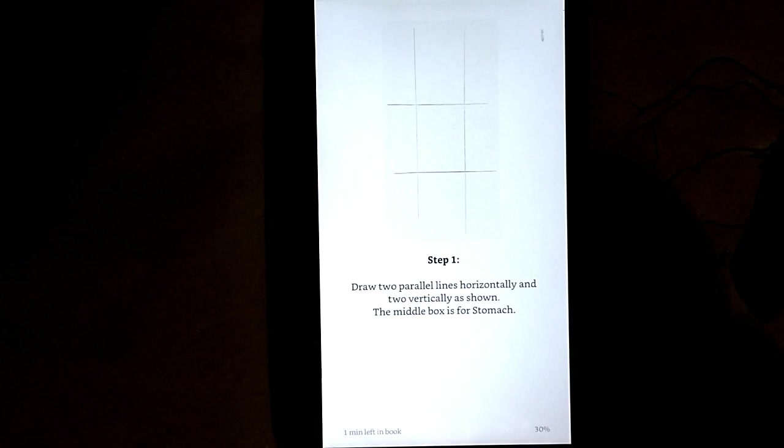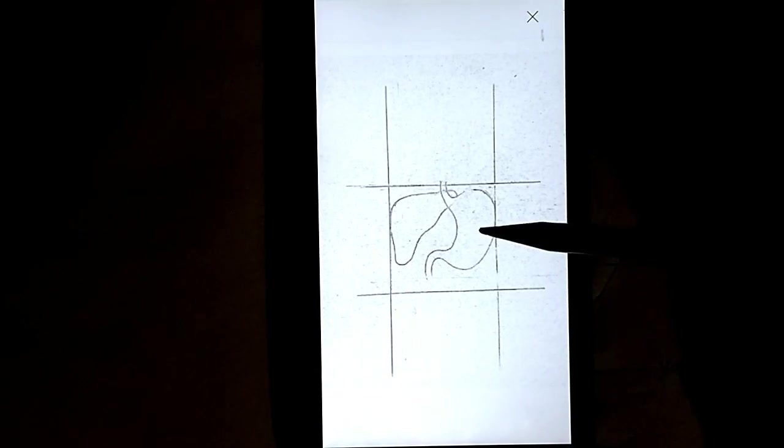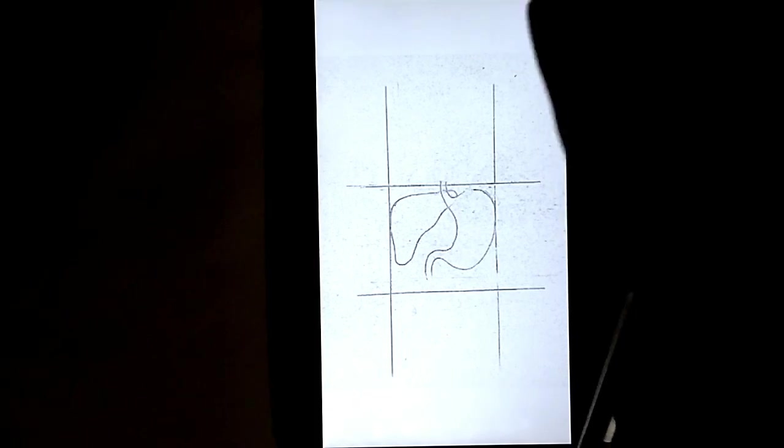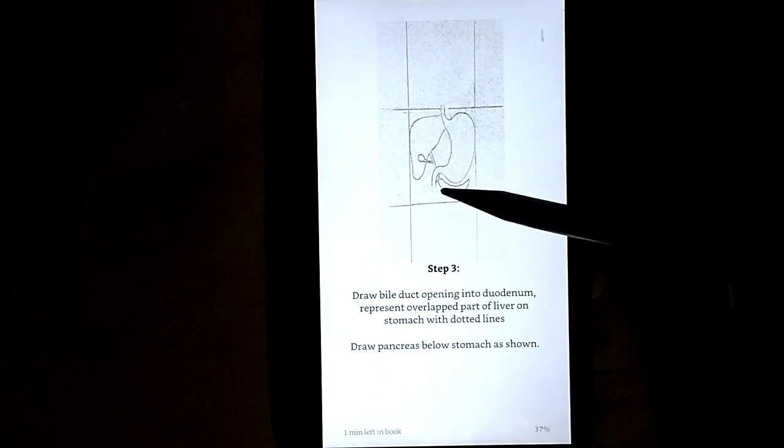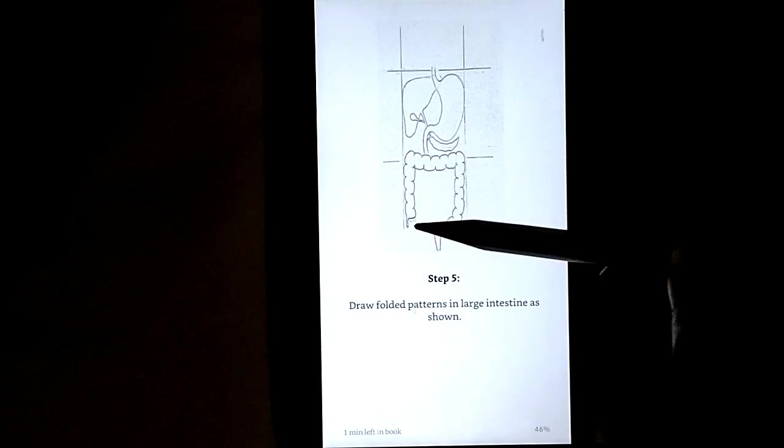So here in this book, I have explained how to draw the human digestive system very neatly using easy steps. So the first step, you need to draw two lines vertical and two lines horizontal. Next, in the next step, you need to draw the stomach and the liver in the center box. Next, in the next step, you need to draw the pancreas and the gallbladder. Next step, here you need to draw the large intestine.